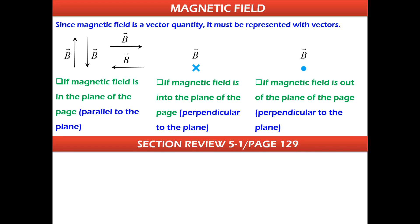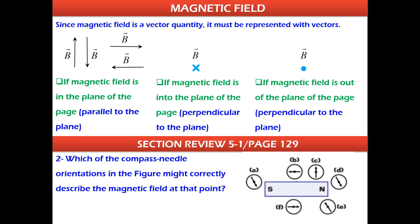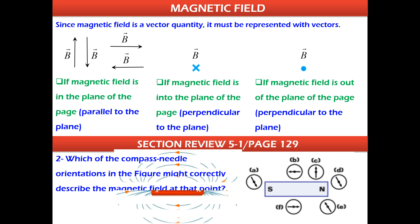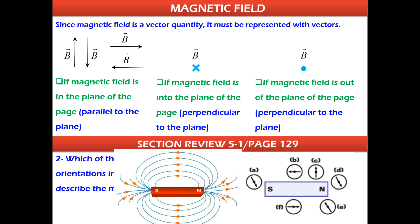Question 2: Which compass needle orientation in the figure might correctly describe the magnetic field at that point? A compass needle is a magnet. When suspended so it can rotate freely, it aligns itself in the direction of the magnetic field lines. Looking at the direction of the magnetic field lines around the magnet, compass needles B and A are oriented in the direction of the magnetic field lines, while the rest are perpendicular or in the opposite direction. So the correct answer is A and B.